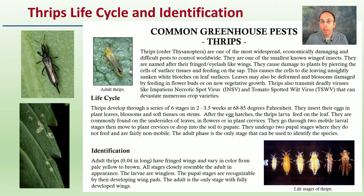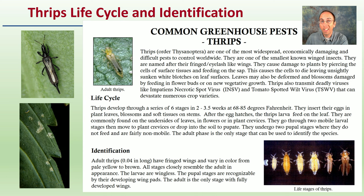Thrips can go through a series of six life cycle stages in only about two to three and a half weeks at 68 to 85 degrees Fahrenheit. You should be monitoring and recording temperature because it can impact the rate of development of certain insects. For identification, adults are very small and slender and can have different colorations. The larvae are wingless, so they don't travel very far, and they tend to prefer very hidden portions of the plant.